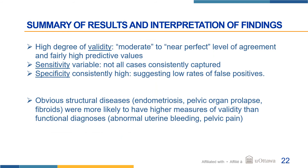Across all diagnoses, we did see a high degree of validity, showing a moderate to near perfect level of agreement for our kappa statistic, and fairly high predictive values across all diagnoses. Overall, the sensitivity was variable, so not all cases were consistently captured, but our specificity was consistently high, suggesting low false positive rates. We found that for obvious structural diseases, we were more likely to have higher measures of validity than with functional diagnoses.